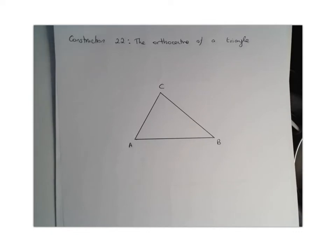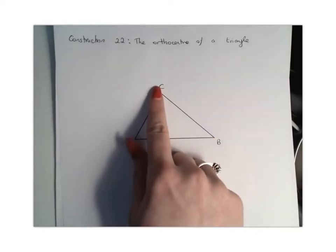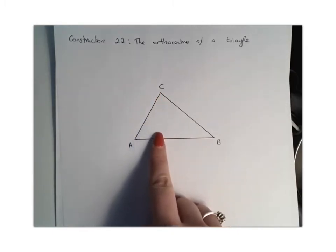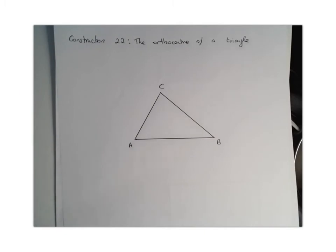So what the altitude of a triangle is, is where we find the line which is perpendicular to the line, let's say AB, that goes through the point C. So basically we're going to need to construct a line that goes down here to the line AB and meets it at 90 degrees. So we're going to use our set square for this one.